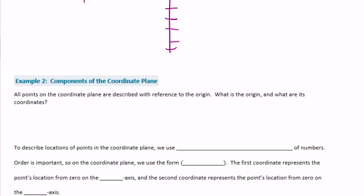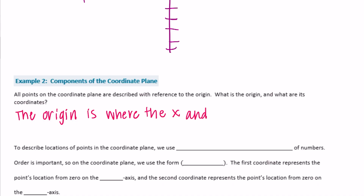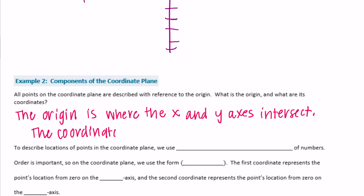So let's describe it. We can say the origin is where the x and y-axis intersect, and the coordinates are (0, 0). To describe locations of points on the coordinate plane, we use ordered pairs of numbers. For example, (0, 0) is an ordered pair.